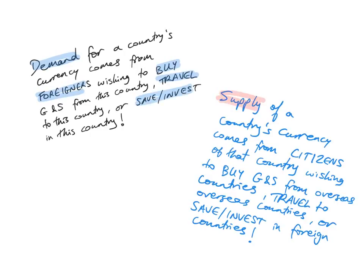The supply of the currency on the foreign exchange market, on the other hand, comes from the citizens of that country. So the supply of US dollars comes from US citizens because they are the ones that live in the US — they are the ones that already have those dollars. It comes from the citizens of that country that wish to buy goods and services from other countries, travel to overseas countries, or save and invest in foreign countries. So remember: the demand on the foreign exchange market for your currency comes from foreigners, and the supply comes from citizens wishing to buy, travel, save, or invest overseas.